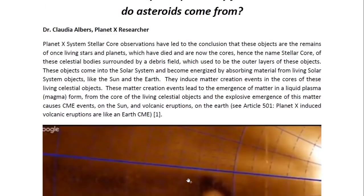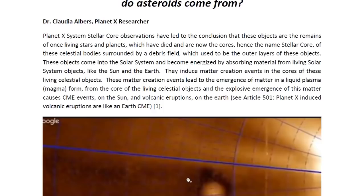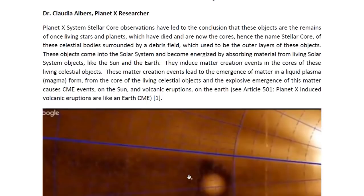These objects come into the solar system and become energized by absorbing material from living solar system objects like the sun and the earth. They induce matter-creation events in the core of these living celestial objects. These matter-creation events lead to the emergence of matter in a liquid plasma or magma form from the core of the living celestial objects, and the explosive emergence of this matter causes CME events on the sun and volcanic eruptions on the earth.